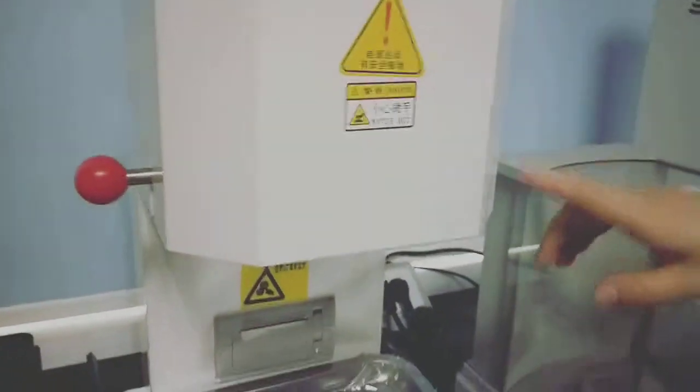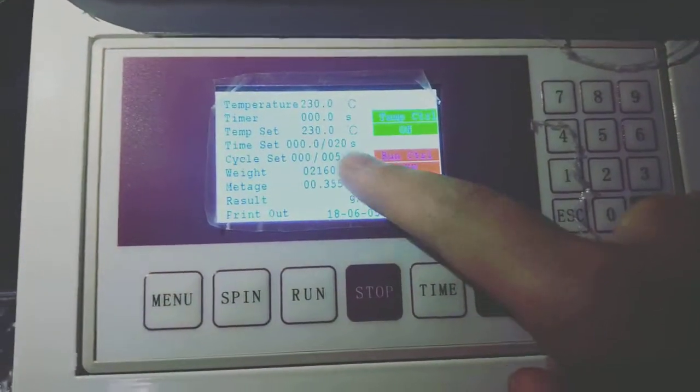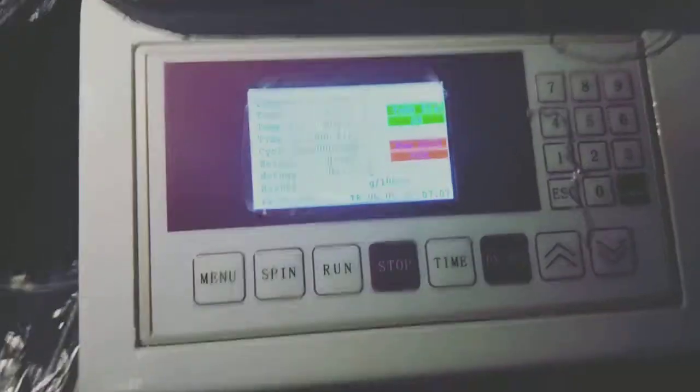As we can see, the extrusion speed is slow. Then we can change the cut time to 20 seconds every piece. It means automatically cut one piece every 20 seconds.